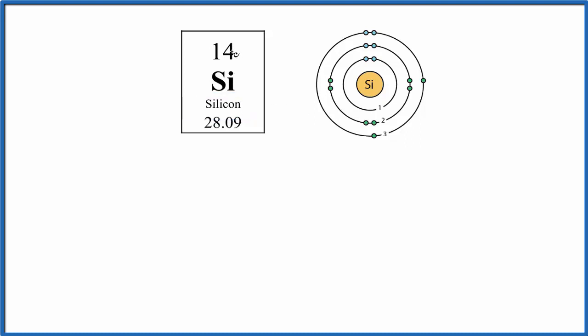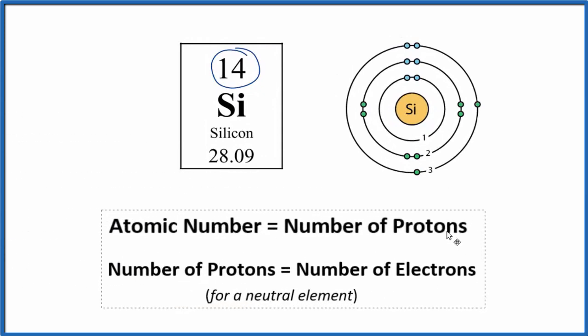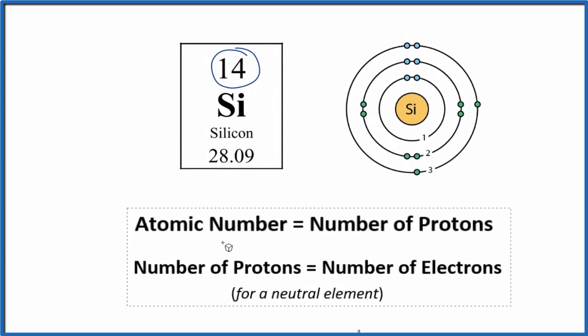So for silicon, we can see that the atomic number is 14, and the atomic number, that's equal to the number of protons. So we have an atomic number of 14, that means we have 14 protons in the nucleus here of the silicon atom.